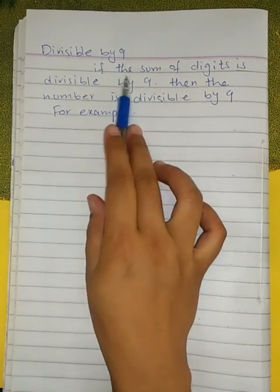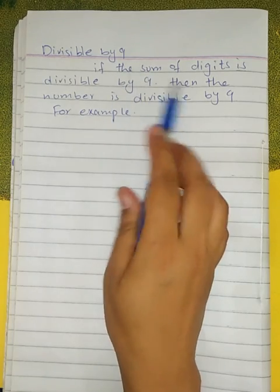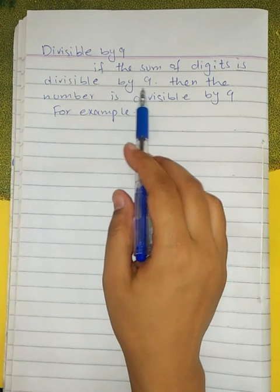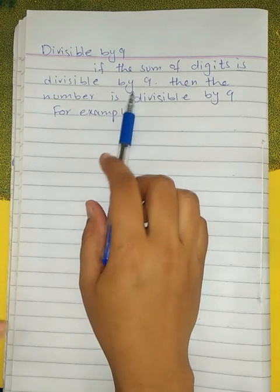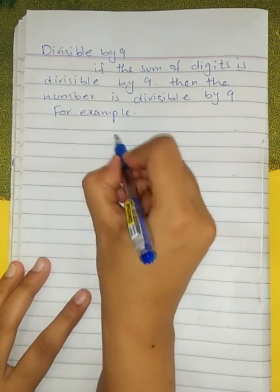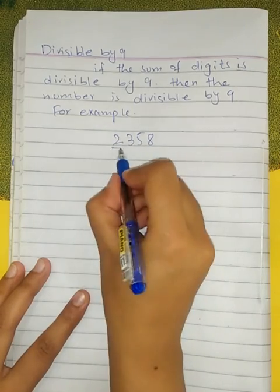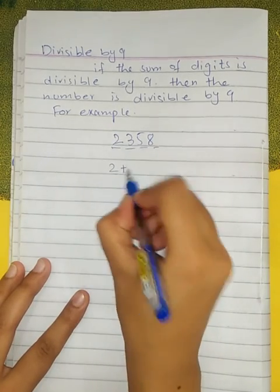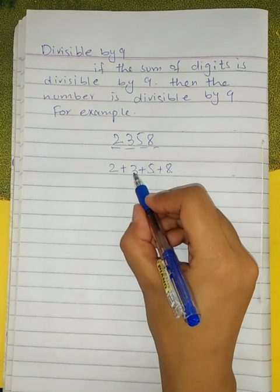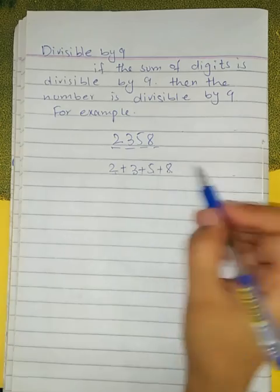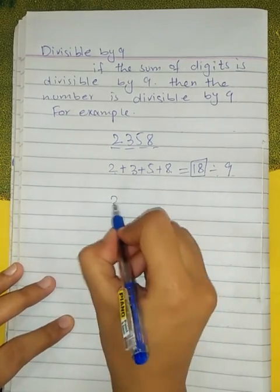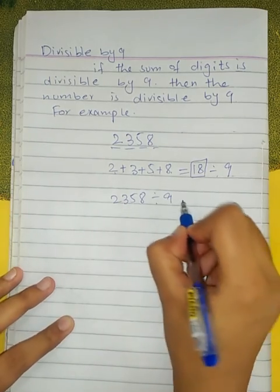Divisibility by 9: a number is divisible by 9 if the sum of its digits is divisible by 9. For example, the number 2358 — add the digits: 2+3+5+8 = 18. Since 18 is divisible by 9, the complete number 2358 is divisible by 9.